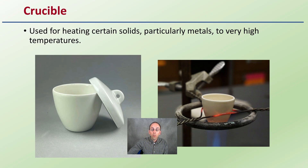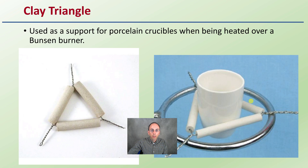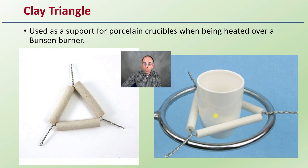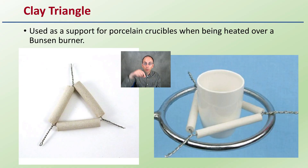The crucible is used for heating as well, but can tolerate very high temperatures — a little thicker ceramic than the evaporating dish, utilized for a very similar purpose. The clay triangle is used to support and hold that crucible upright so it doesn't tip over while you're heating it. Especially if you have to mix anything, it acts as an extra layer of support.